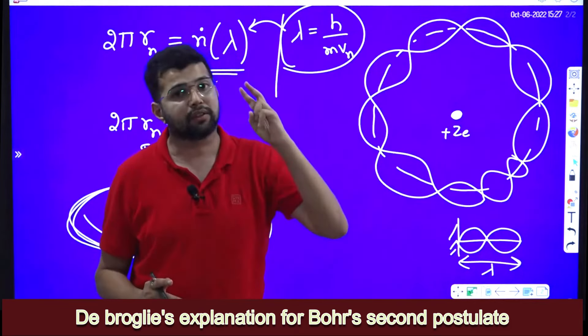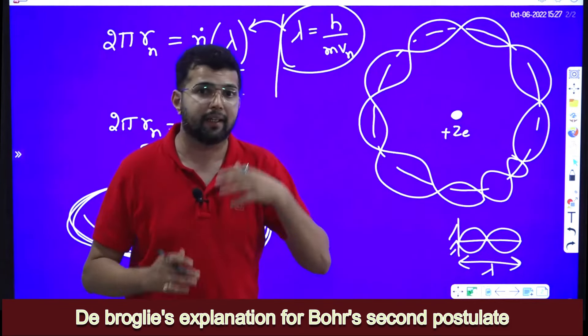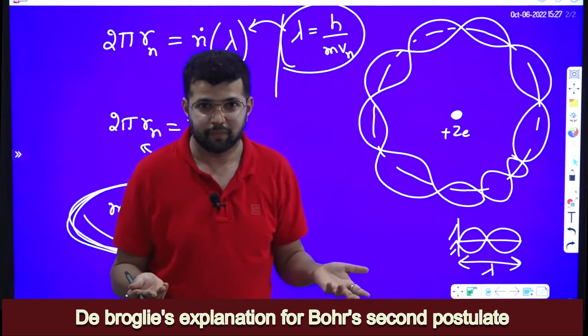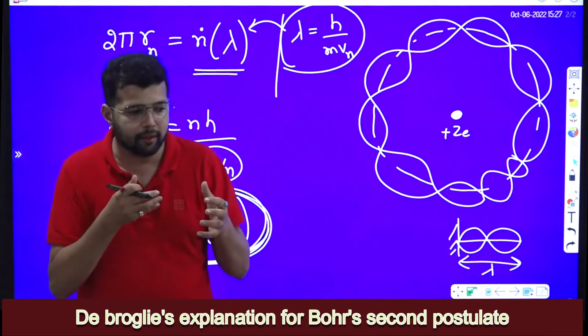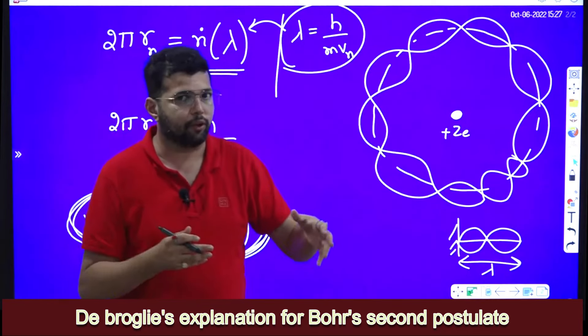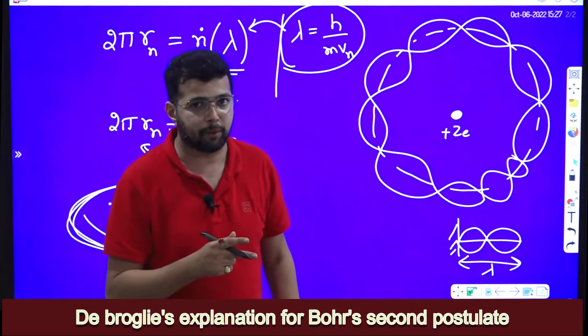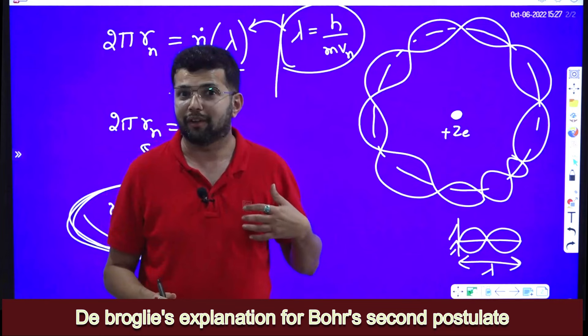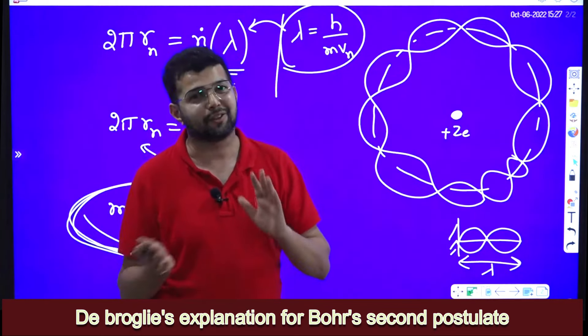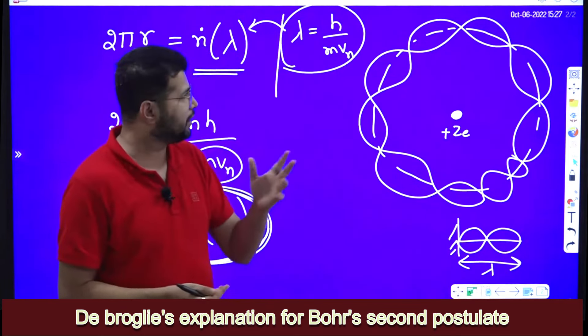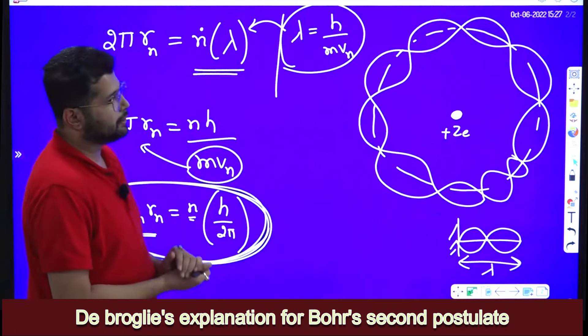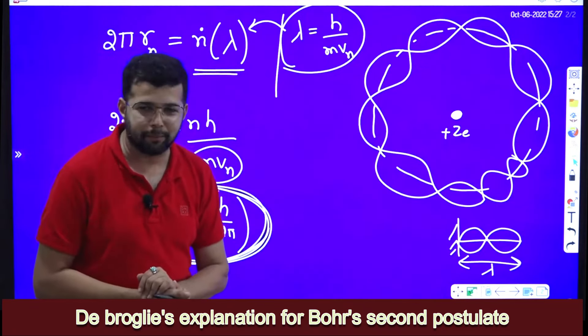So Bohr's theory is correct, Bohr's second postulate correct, and Niels Bohr got Nobel prize also. Now, what de Broglie is telling? If you think that electron is a wave, you can give explanation to the Bohr's second postulate and that is correct. So therefore, de Broglie hypothesis is also correct. So this is the significance of Louis de Broglie's explanation for Bohr's second postulate.